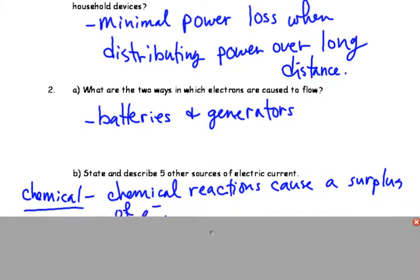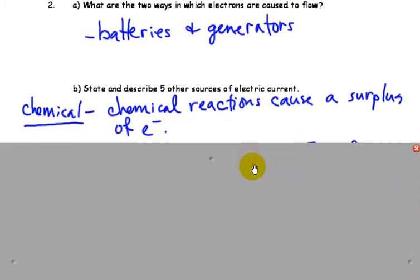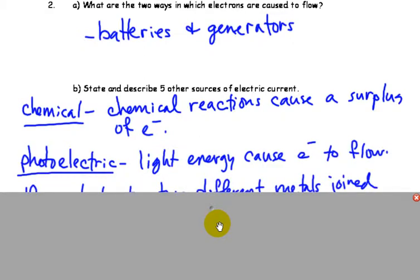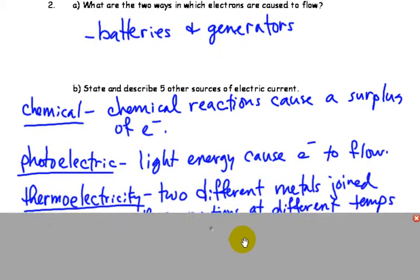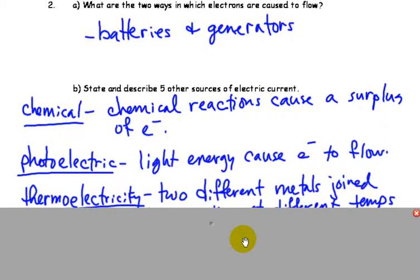Five other sources of electric current. Chemical reactions, in which electrons are produced, can cause a surplus in one area and a deficit in another area. Photoelectric, light actually dislodging electrons from something, causing them to flow in a particular direction.